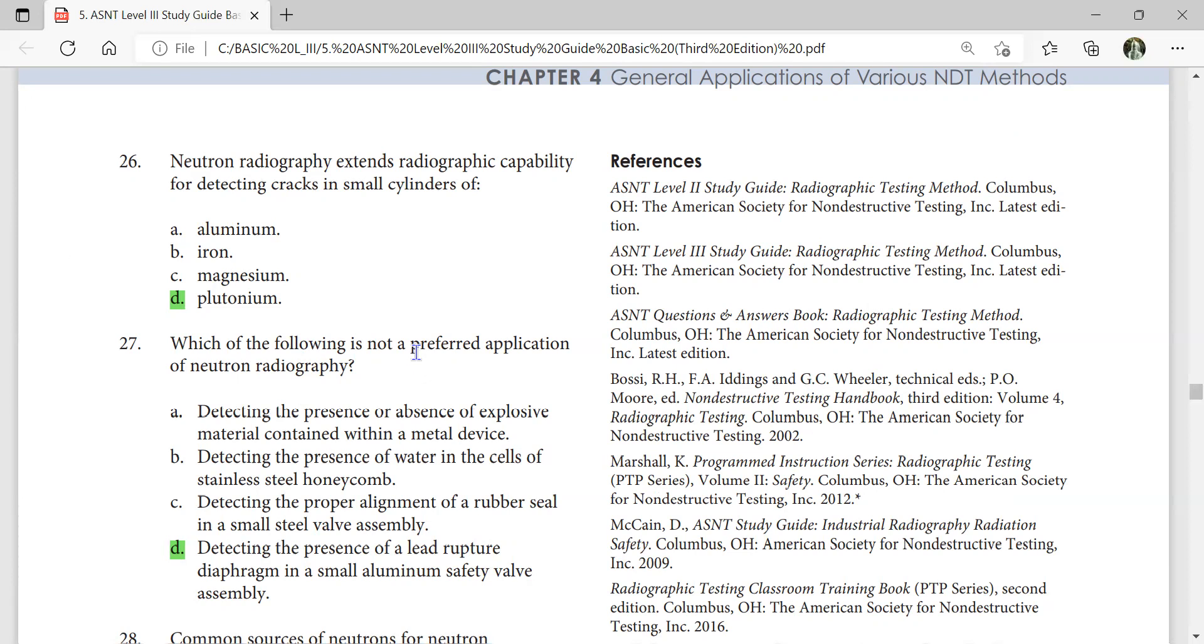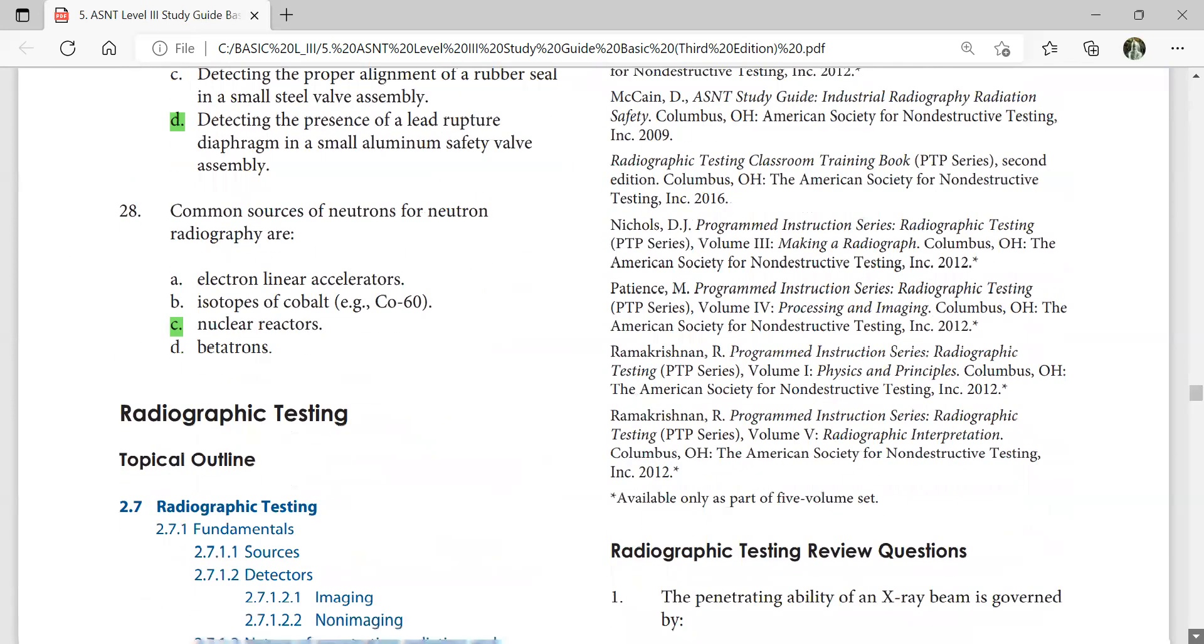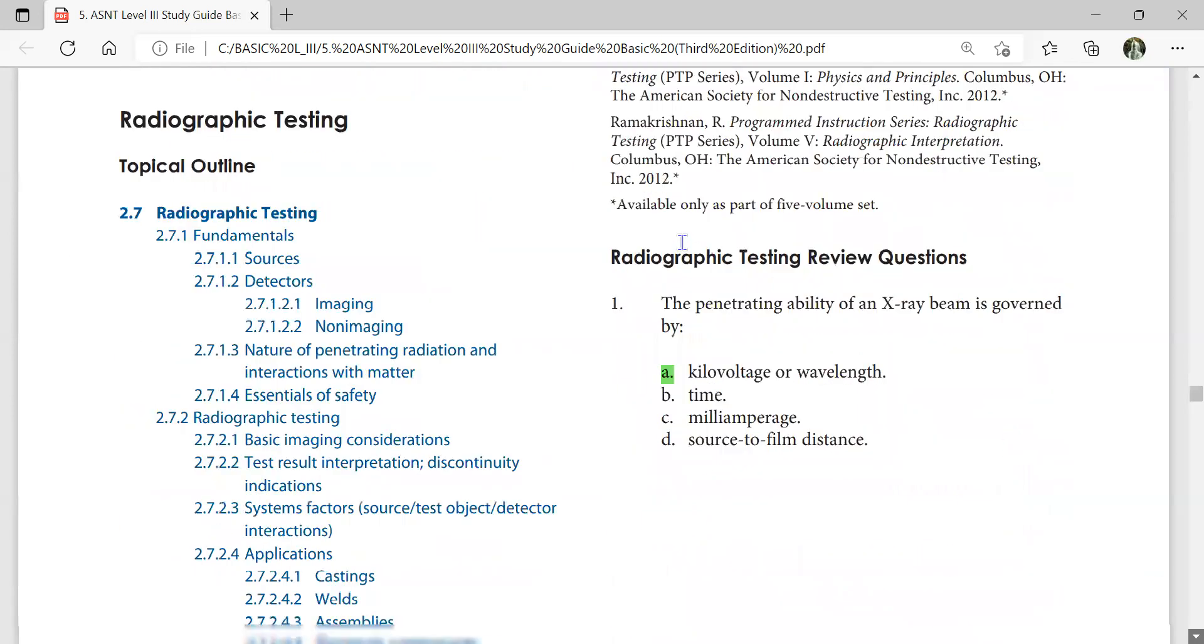Which of the following is not a preferred application of neutron radiography? Detecting the presence of lead rupture diaphragm in a small aluminum safety valve assembly. Instead go for radiography by x-ray. Common sources of neutrons for neutron radiography are nuclear reactors.